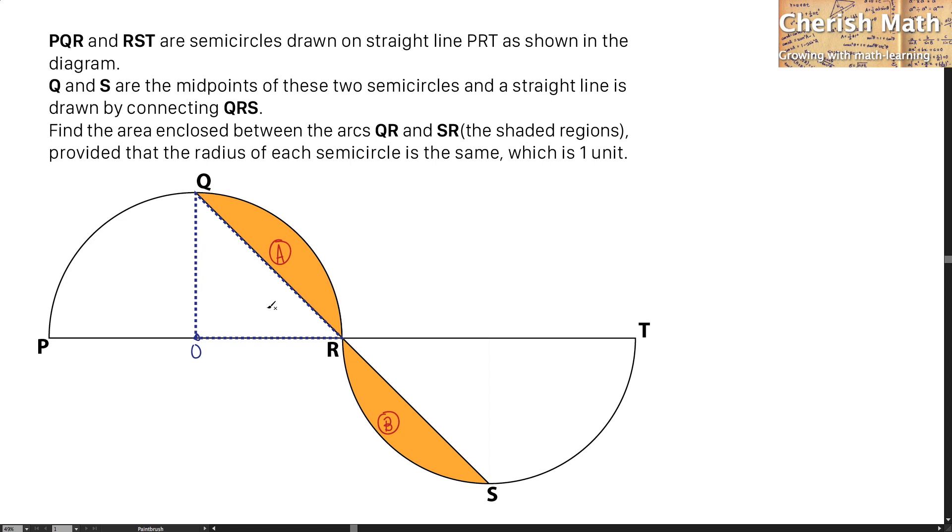The radius of this semicircle is one unit, and I'm going to work out the area of this A region. To find area A, I have to use the area of sector OQR minus the area of the triangle.